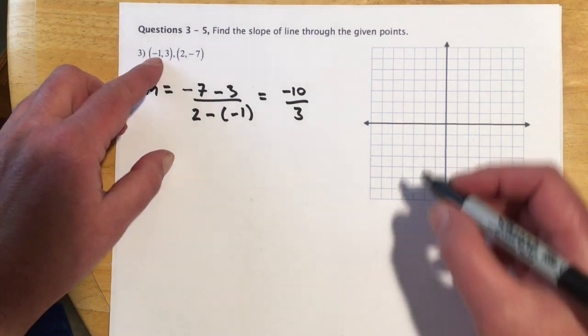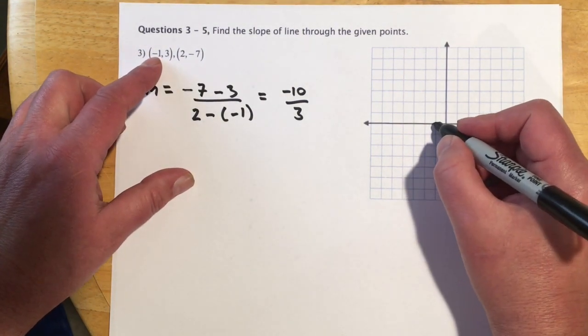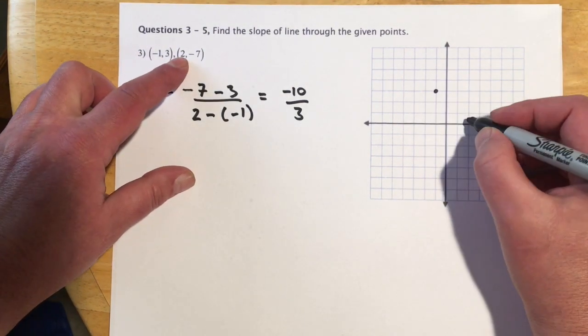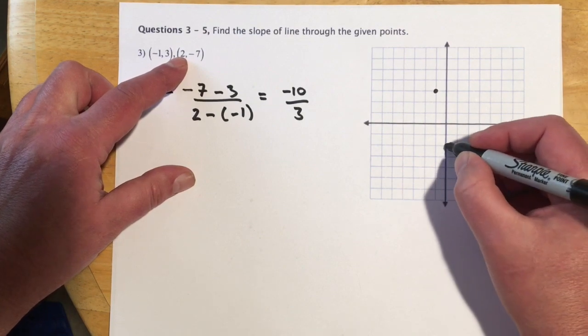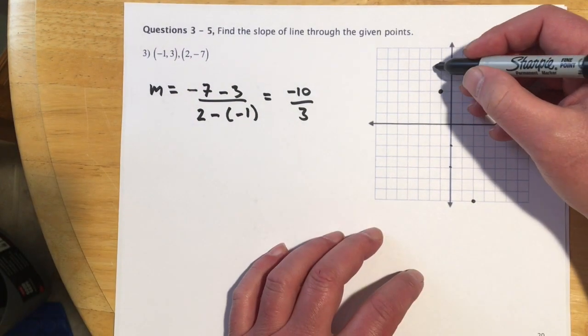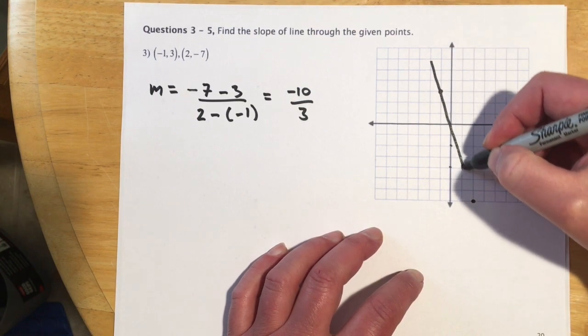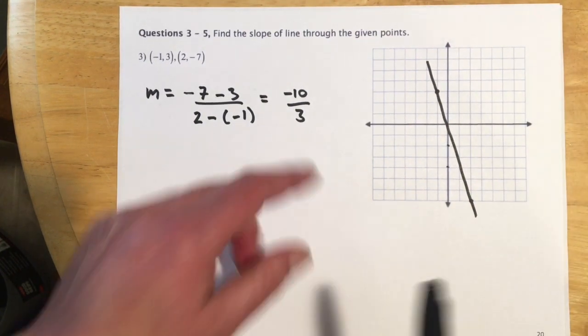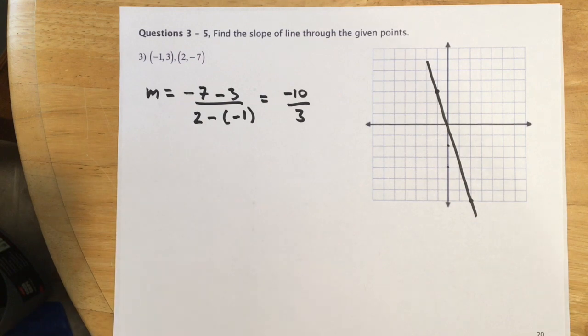So then if I come over here and graph this, when x is negative 1, y is 3. And when x is 2, y is negative 7. 2, 4, 6, 7. And then I draw that, and try to make a straight line. I should find that the rise and the run are negative 10 thirds. So I'll do rise first. So that would be right here.